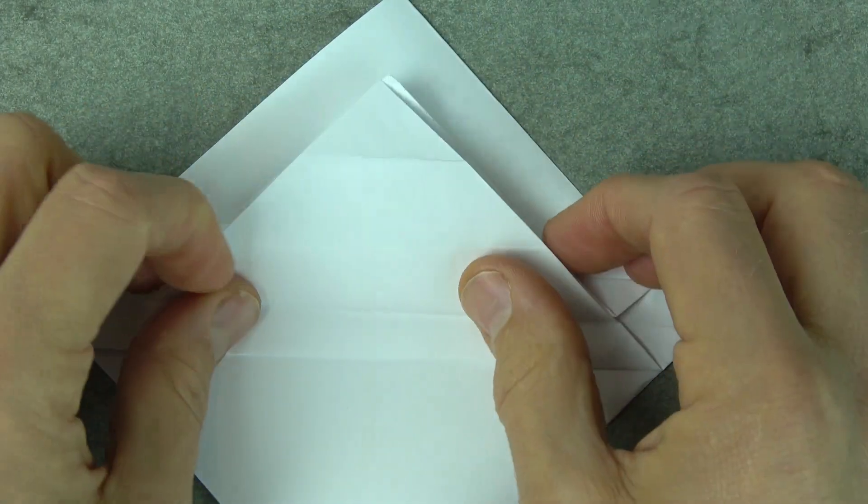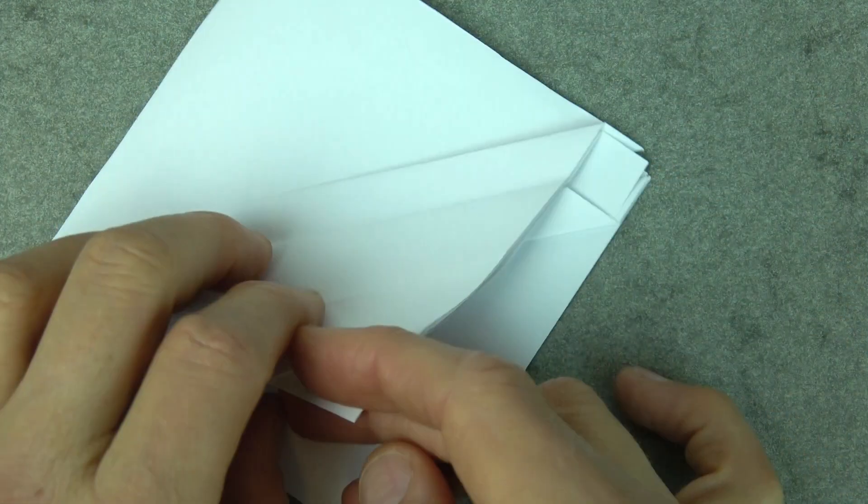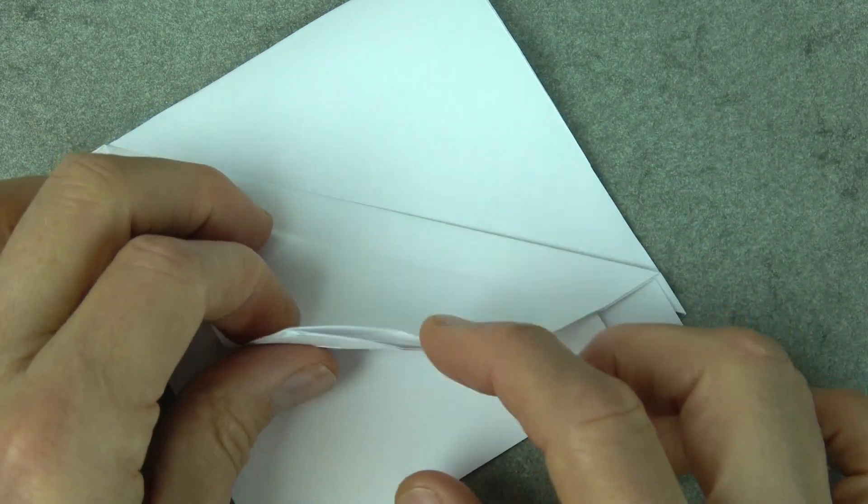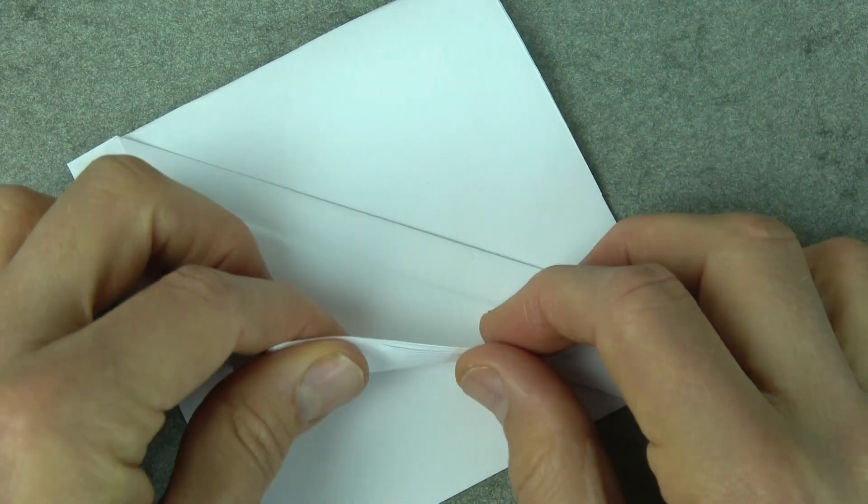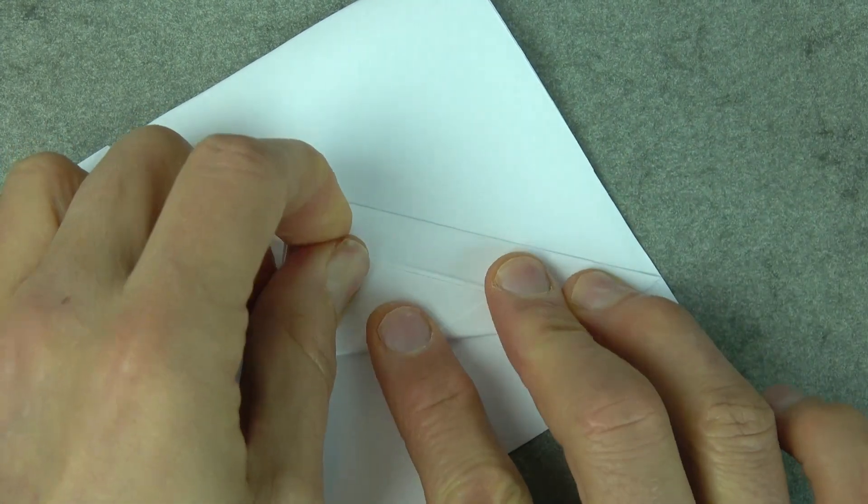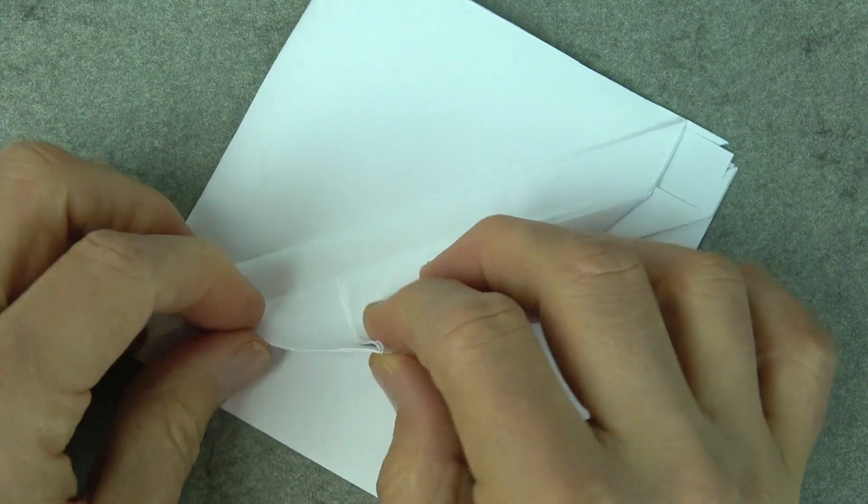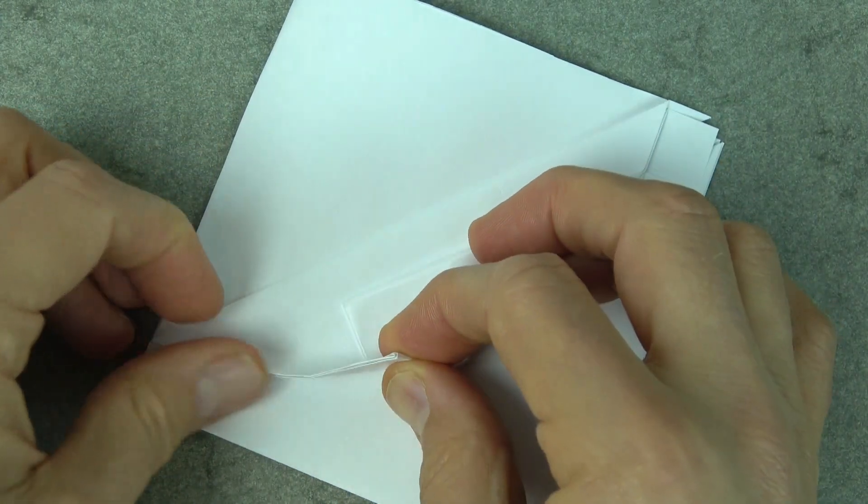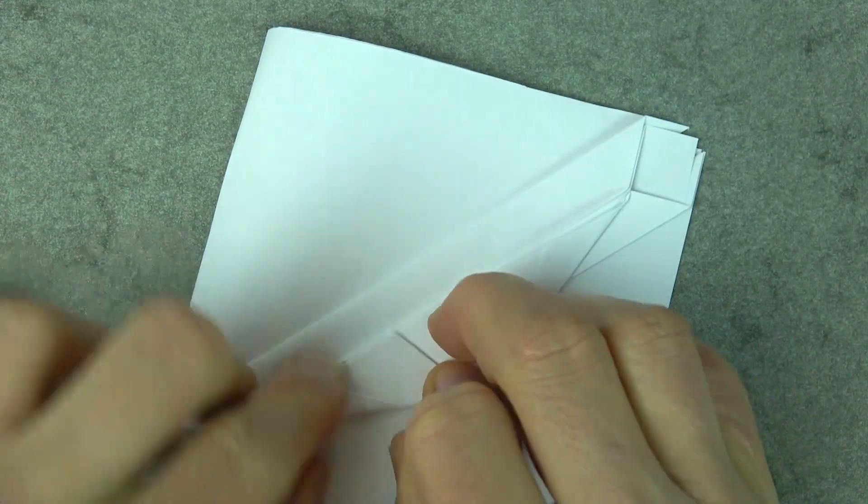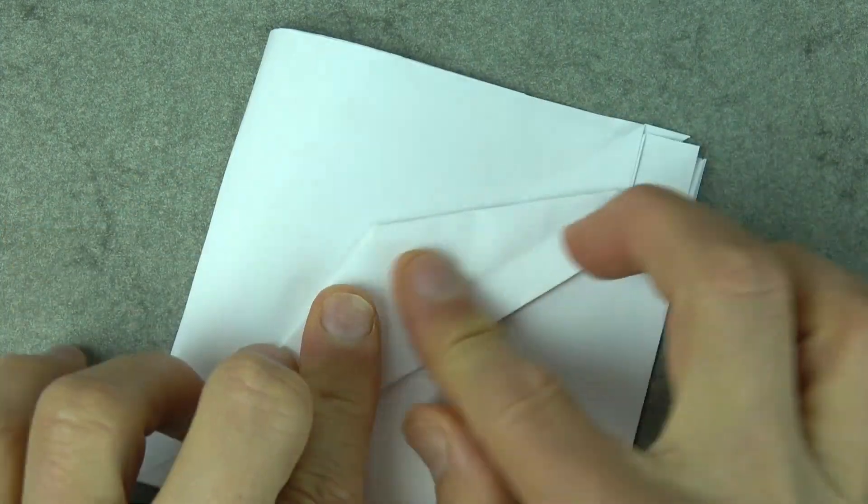And now, fold this flap up so that all of these edges align with the crease. And now, fold this flap up so that this edge aligns with the crease. And fold this flap up like this.